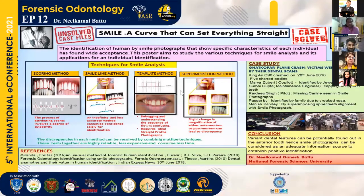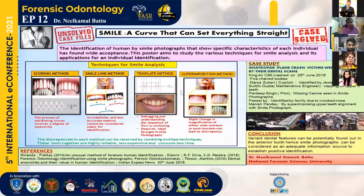Next, we come to the smile line method. The smile line is based on ante-mortem and post-mortem photographs, highlighting the incisal outline from canine to canine. The two outlines are superimposed with layers of gradual transparency — 0%, 25% to 100%. If they coincide, there are chances they belong to the same individual. However, it is an indefinite method, not accurate, and cannot be solely used for identification.